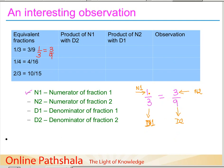What we are going to do is multiply the numerator of the first fraction with the denominator of the second, and the denominator of the first with the numerator of the second. So in this case, n1 times d2 is 1 multiplied by 9, which gives us 9. And d1 times n2 is 3 times 3, which is also 9.